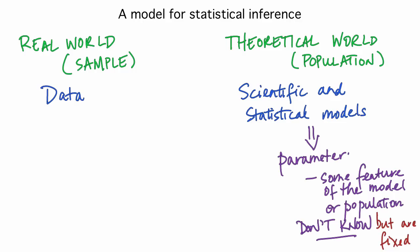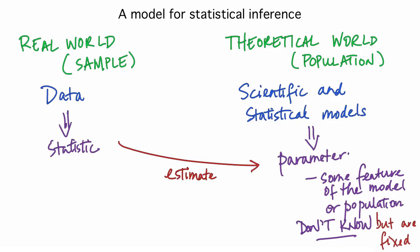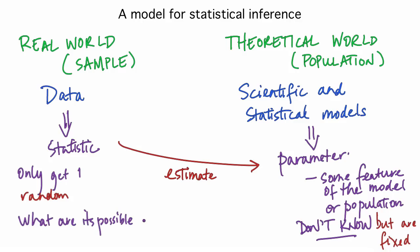Inferential statistics is often about estimating parameters by some statistic which we calculate from our real world data. In real life, we only get one sample or set of data from which we calculate our statistic. But there are many values it could be, depending on the random measurements that give us our data, so our statistic is a random quantity. In order to make inferences based on the single sample we get, we need to think about the behavior of all of the possible sample data sets we could have gotten.